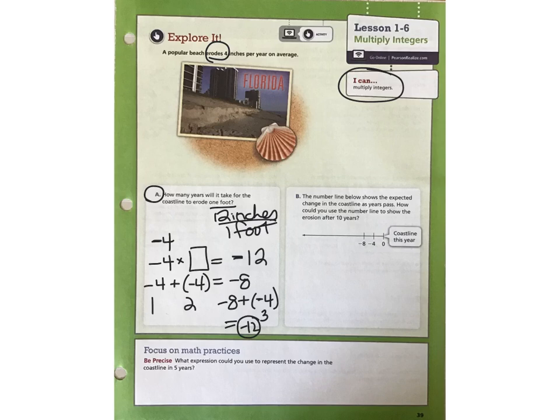Therefore, negative 4 times 3 equals a negative 12. Now, take a look at part B. The number line below shows the expected change in the coastline as years pass. How could you use the number line to show the erosion after 10 years?